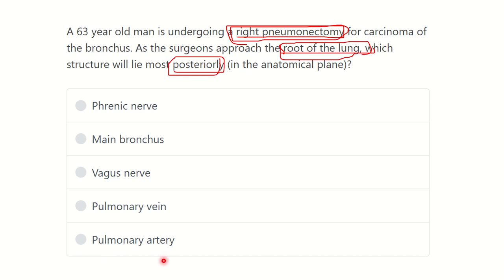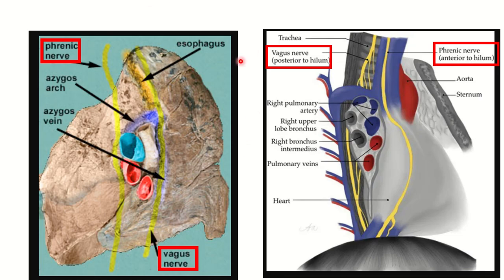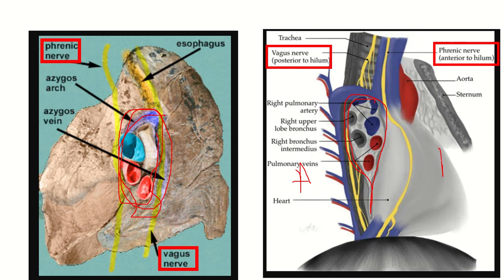Let's look at the lungs. Here the anterior part of the lung is on this side and the posterior area is on the other side. The hilum or root of the lung is shown here. We can see anteriorly there is a nerve passing just anterior to the hilum — this nerve is the phrenic nerve — and posteriorly there is another nerve, which is the vagus nerve.